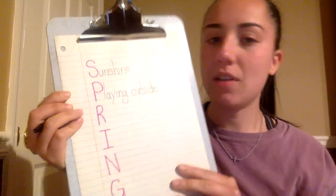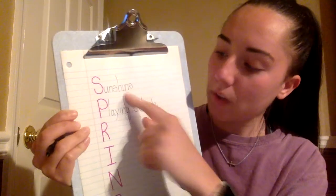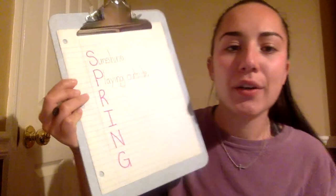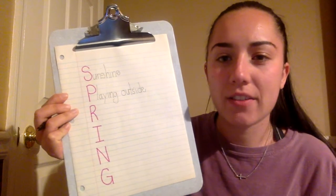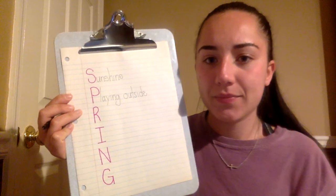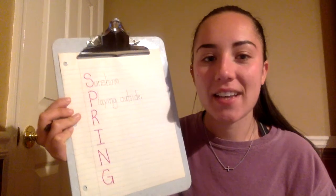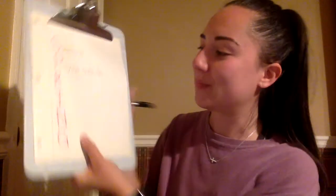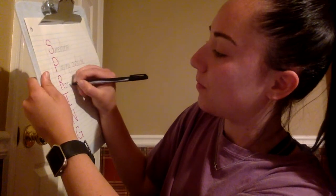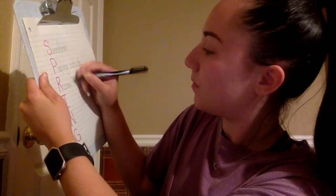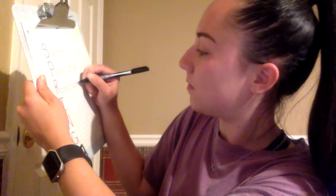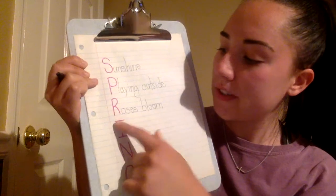So you can see that I'm not doing a full sentence. I'm just picking one word or two words to say what spring is like. My next letter is R. What is something that has to do with spring that starts with an R? I think of flowers a lot in the spring, and one particular flower I think of are roses. So I'm going to say that roses bloom.